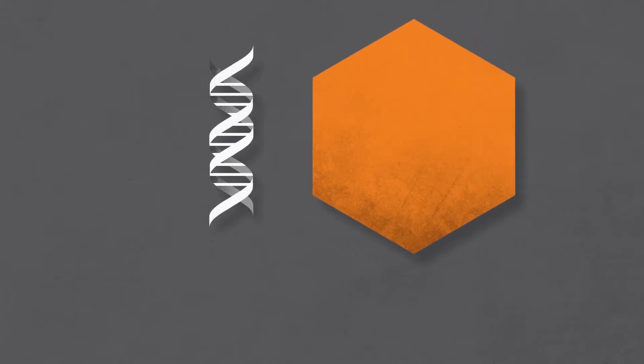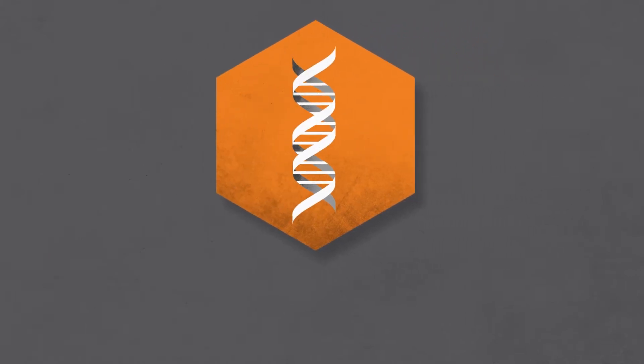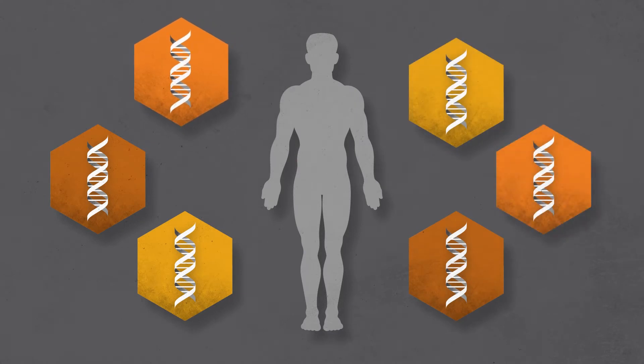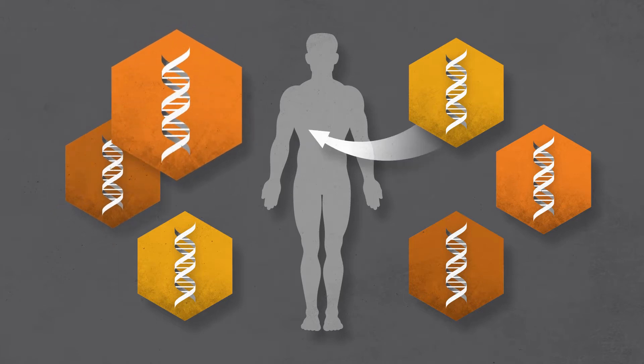Vectors are chosen based on which type of cells in your body need the new gene. This is because vectors are very particular about the type of cell they choose to enter. For example, a certain vector may be used to deliver a gene to cells in the brain, while another vector may be used to deliver a gene to cells in the liver.